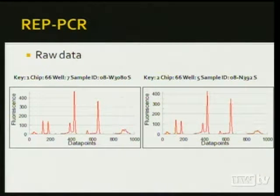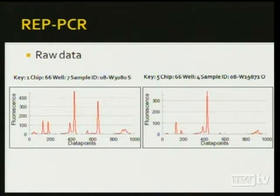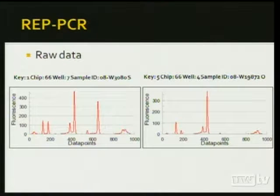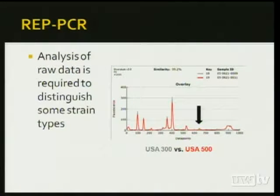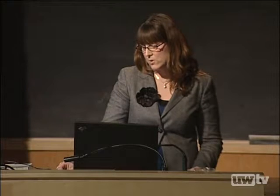Looking at the raw data, you can see the electropherogram pattern — two patterns that are identical versus others where a very large peak has disappeared and others have diminished. For Staphylococcus aureus, a one-peak difference is considered a difference in relatedness. The USA 300 and USA 500 strain types in correlation with pulse field typing differ in the REP-PCR system by only one tiny peak, which isn't picked up well by the software — you have to look at the raw data.